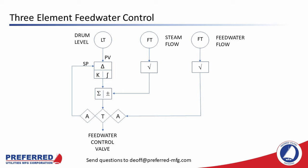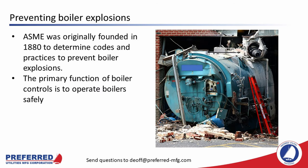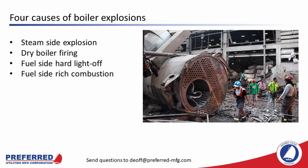Our final topic is preventing boiler explosions. Boiler explosions used to be a very big deal — they were very common. In fact, the American Society of Mechanical Engineers was originally founded in 1880 to determine codes and practices to prevent boiler explosions; their first meeting had 30 people in it. The primary function of boiler controls is to operate the boiler safely. Now that you know the basics of boiler controls, I'm going to illustrate how boiler controls are designed to prevent the most common causes of boiler explosions. All U.S. boiler and burner manufacturers strictly follow NFPA and other relevant codes — nobody in the U.S. makes an unsafe boiler or burner. Boiler explosions usually fall into one of these categories: a steam side explosion, dry boiler firing, fuel side hard light-off, or fuel side rich combustion.